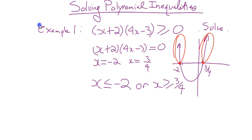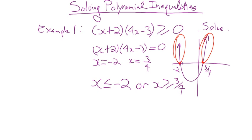So x is less than or equal to −2, or x is greater than or equal to 3/4, because we're interested in the parts above the x-axis, including the zeros since it's 'greater than or equal to.' We could draw this on a number line as well. That's essentially it — we solve where it equals zero, mark those, sketch it, and solve the inequality.